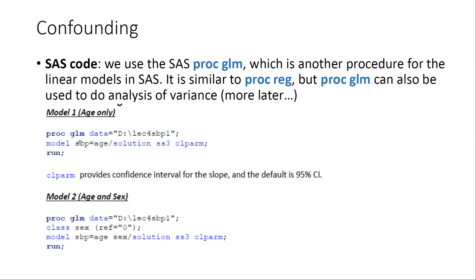In order to see if gender is a confounder for the relationship between age and SBP, we will run two models. The first model will run GLM with age as the only predictor variable for the outcome SBP — this gives the unadjusted or crude effect of age on SBP. The second model will include both age and sex as predictors, giving us an adjusted estimate for the parameter beta one.